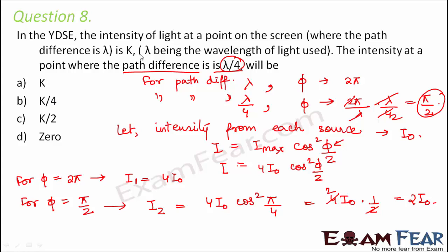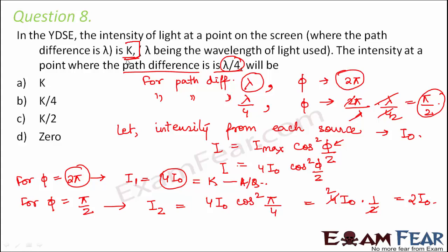We have to express the answer in terms of k. K is the intensity corresponding to path difference λ, which gives phase difference 2π, and that intensity is 4I₀. So k = 4I₀, meaning I₀ = k/4. Our result of 2I₀ therefore equals k/2. So the right answer is option C.